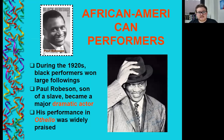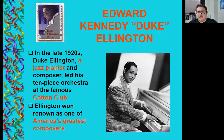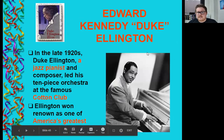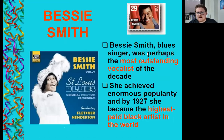During the 1920s, Black performers won large followings. Paul Robeson, son of a slave, became a major dramatic actor widely praised for his performance in Othello. Jazz was born in the early 20th century. In 1922, a young trumpet player named Louis Armstrong joined the Creole Jazz Band, and later joined Fletcher Henderson's band in New York City. Armstrong is considered the most important and influential musician in the history of modern jazz. Duke Ellington, a jazz pianist and composer, led his ten-piece orchestra at the famous Cotton Club and won renown as one of America's greatest composers. Bessie Smith, a blues singer, was perhaps the most outstanding vocalist of the decade — by 1927, she became the highest-paid Black artist in the world.